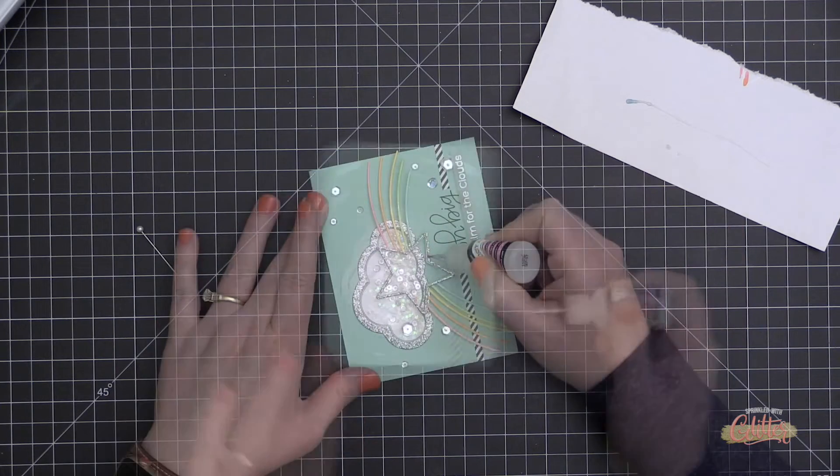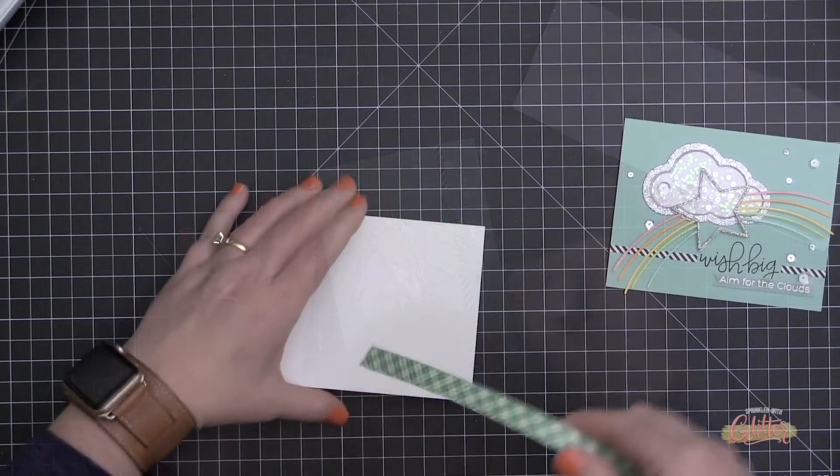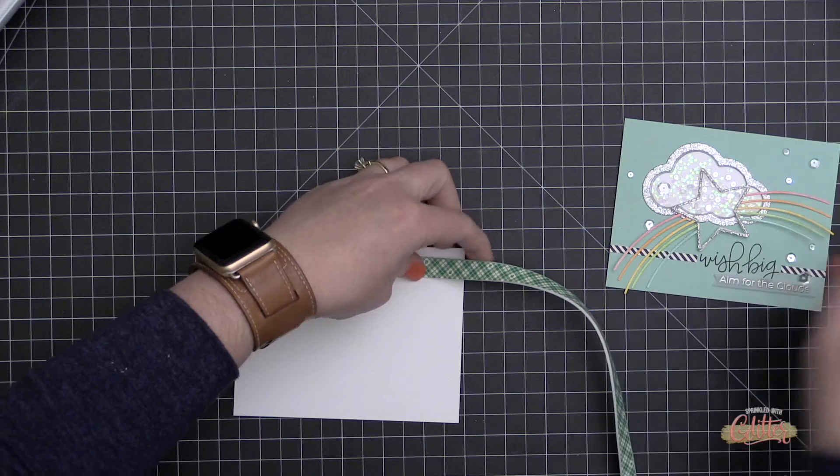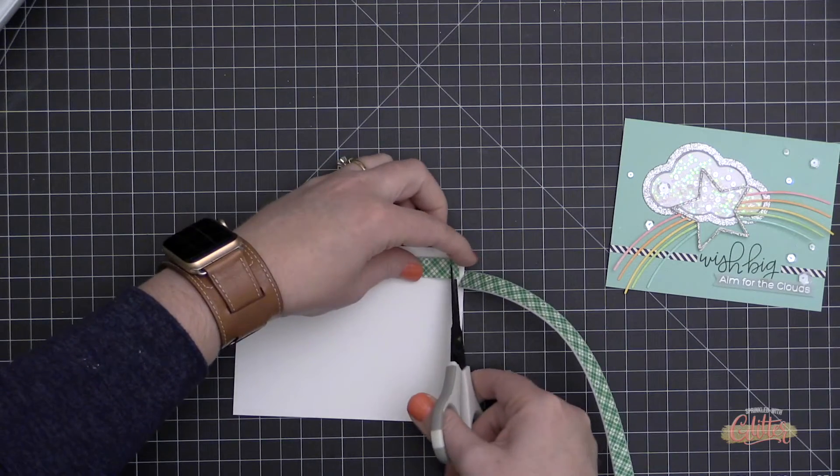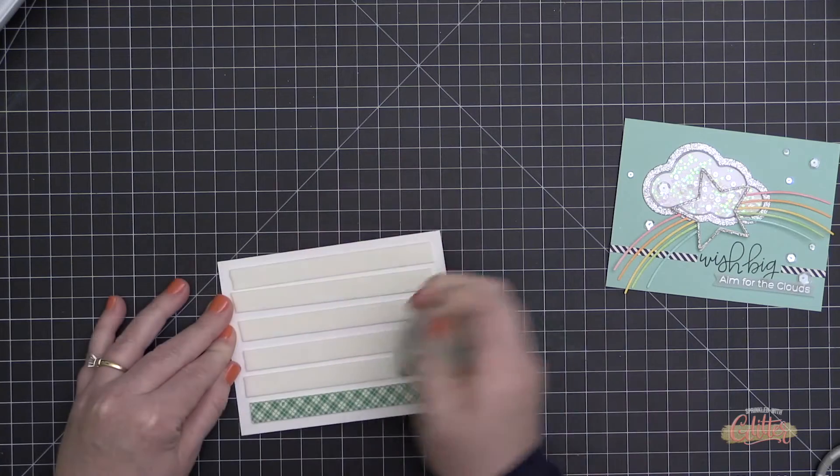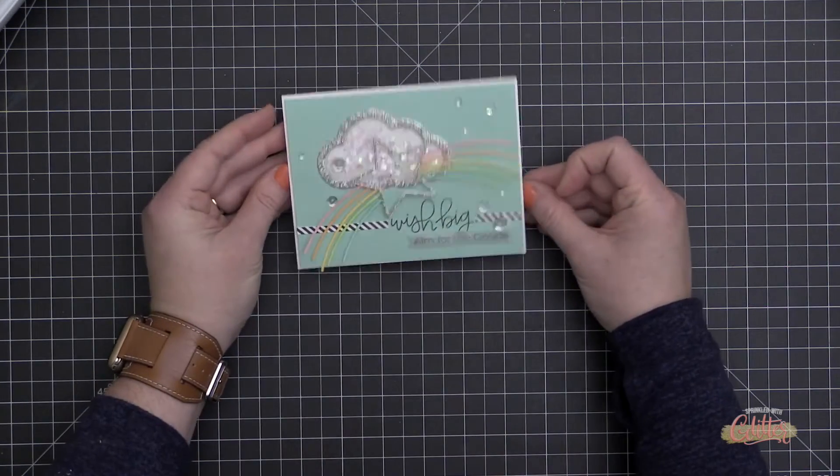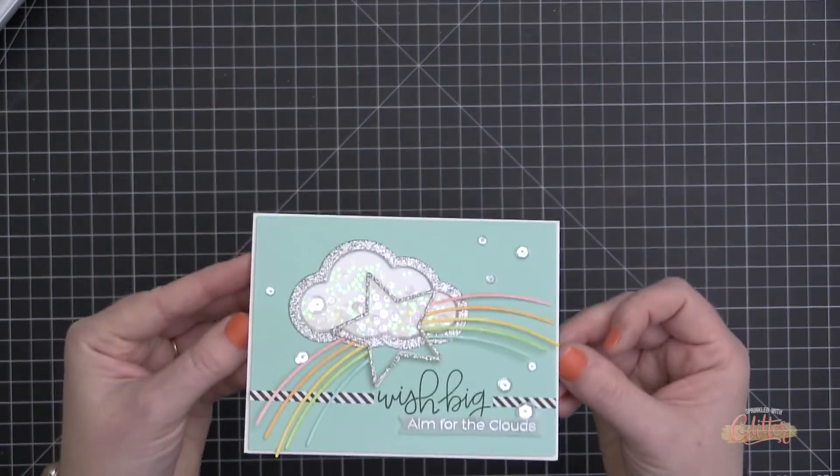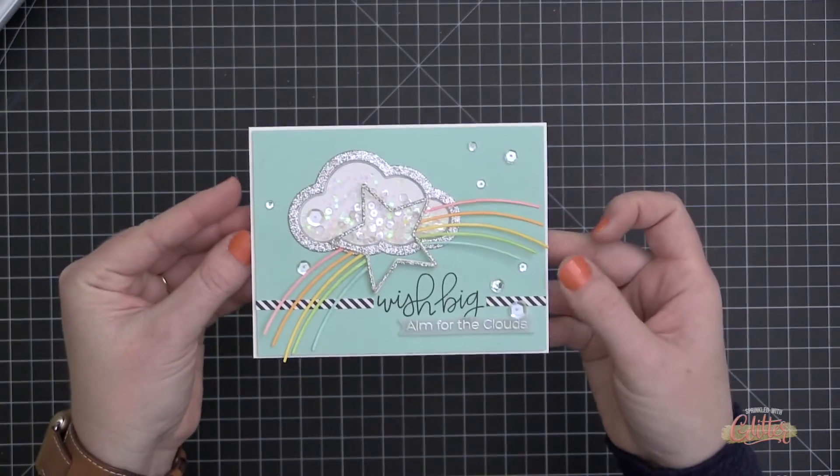I added a layer of Glossy Accents over that silver glitter star, and then I'm going to use some foam tape to adhere this onto my A2 size card base. Now I did mention earlier that if I could do some things over in this card, I would probably do them over. Some of it was the order. I should have put this card front onto the card base before adding all those sequins and that Glossy Accents over that silver glitter star, but it all turned out in the end, so we're all good.